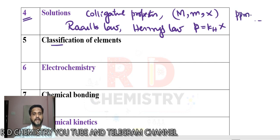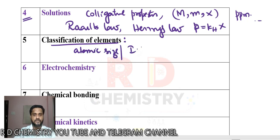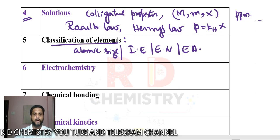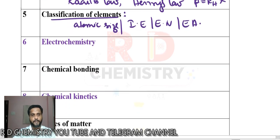Under classification of elements, remember the important periodic properties like atomic size and its variation along the period and down the group. Also ionization enthalpy, electronegativity, and electron affinity — these are very important because they are related to s-block, p-block, and d-block topics. So concentrate on periodic properties.